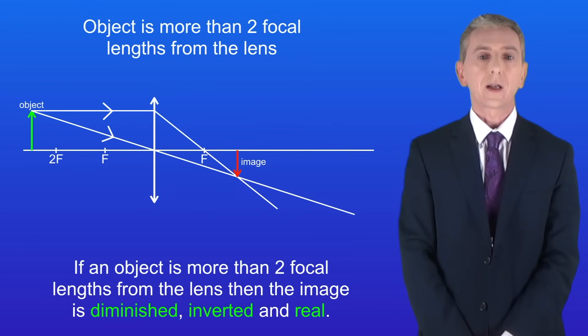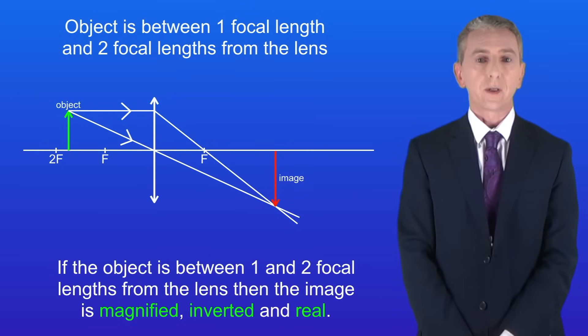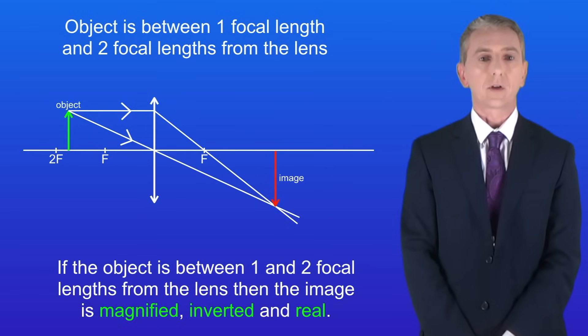If an object is more than two focal lengths from the lens then the image is diminished, inverted and real. However if the object is between one and two focal lengths from the lens then the image is magnified, inverted and real.